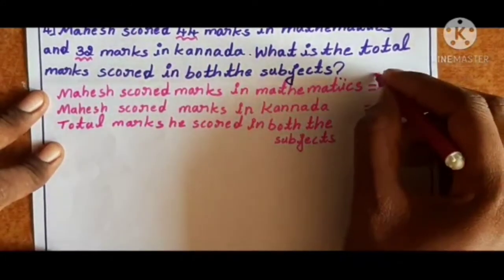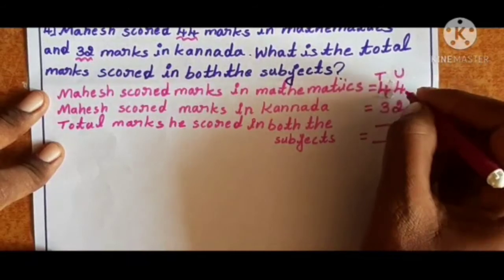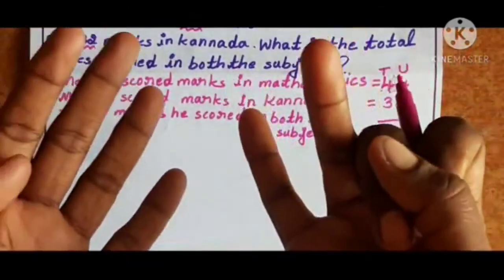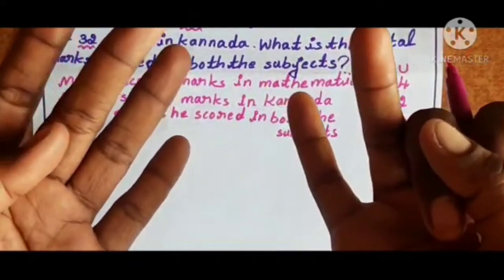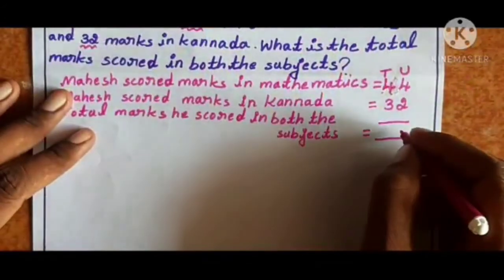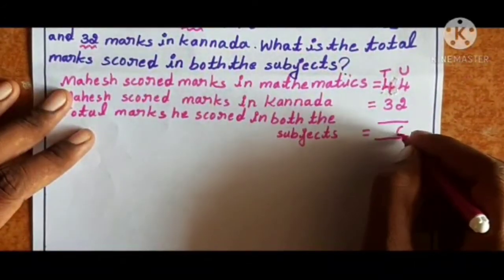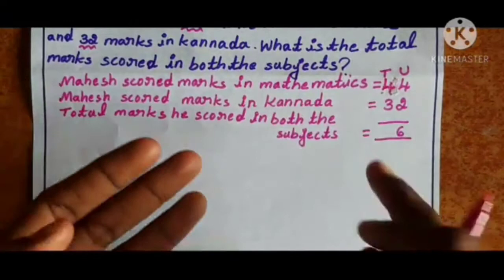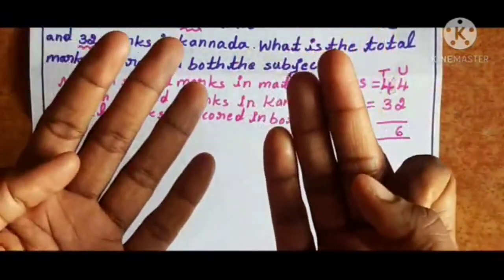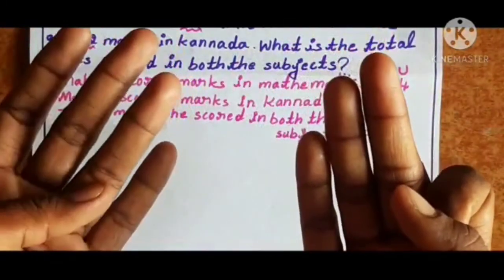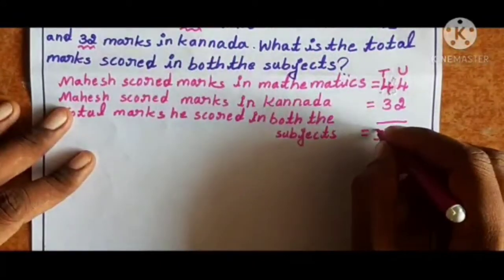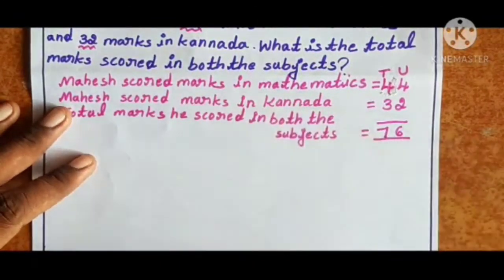First, count units: 4 plus 2. Count now: 1, 2, 3, 4, 5, 6. Next, 4 plus 3. Count now: 1, 2, 3, 4, 5, 6, 7. So total marks is 76.